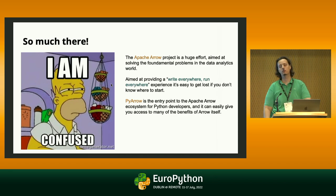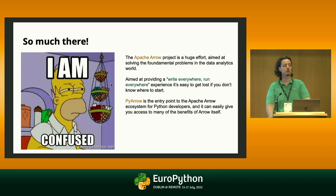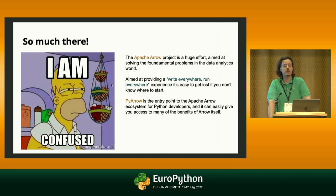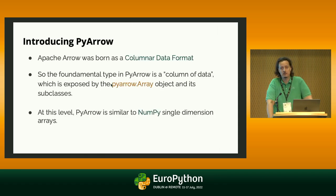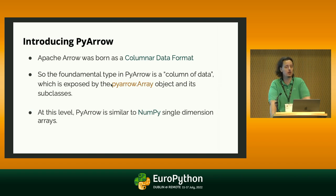We are here specifically to talk about PyArrow, which is the implementation of Arrow for the Python ecosystem. It provides roughly 90 percent of what's available in Arrow itself. So PyArrow is a fairly complete implementation of Arrow — probably one of the most complete implementations — and you can be comfortable that anything documented in Arrow will be available in PyArrow too.